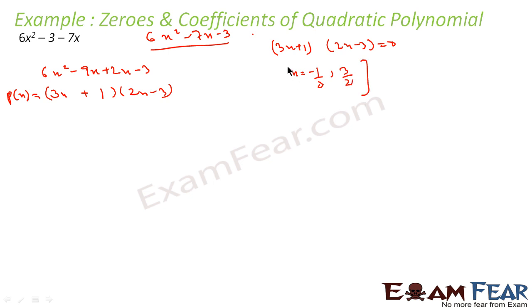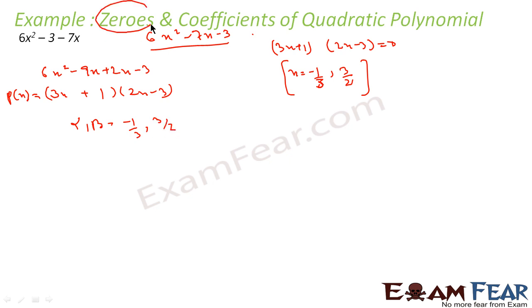So these are the two zeros of this polynomial function: −1/3 and 3/2. We know α and β — α = −1/3 and β = 3/2. Now let's prove the formula again.